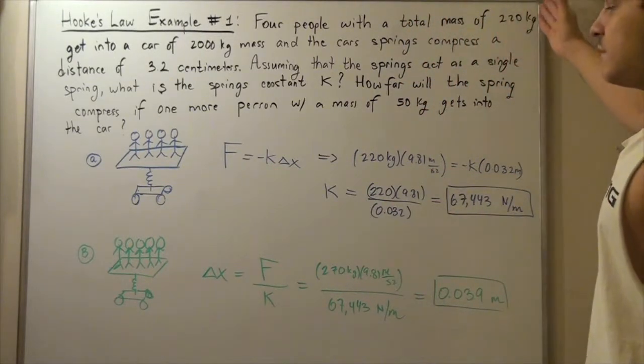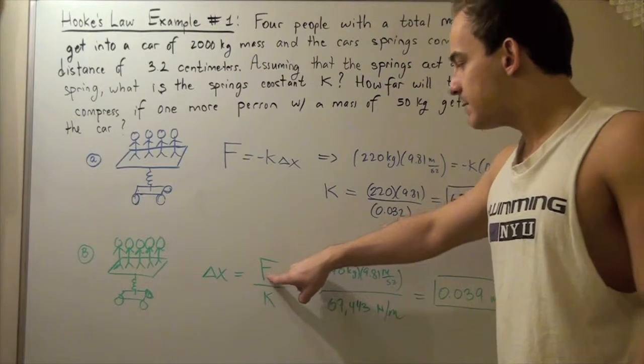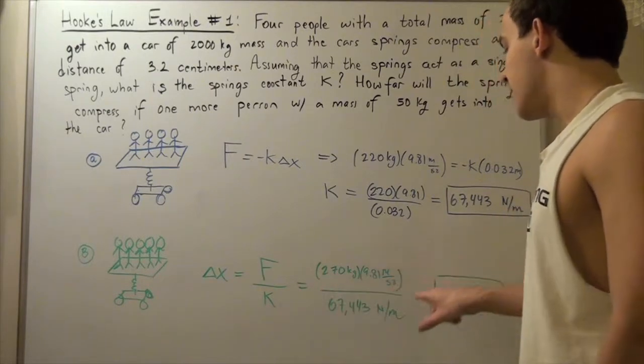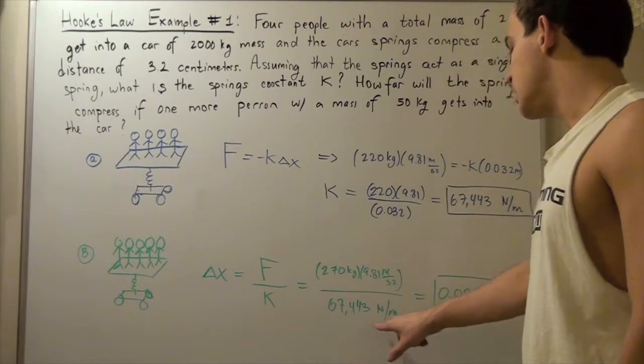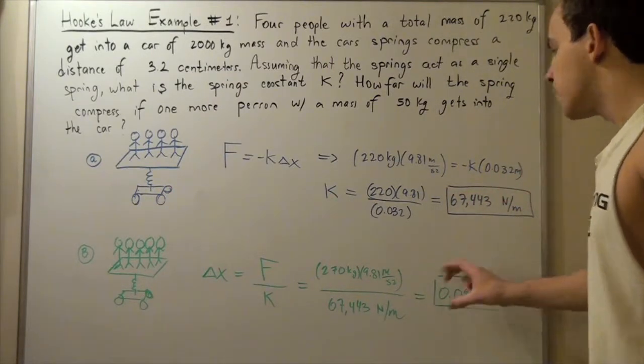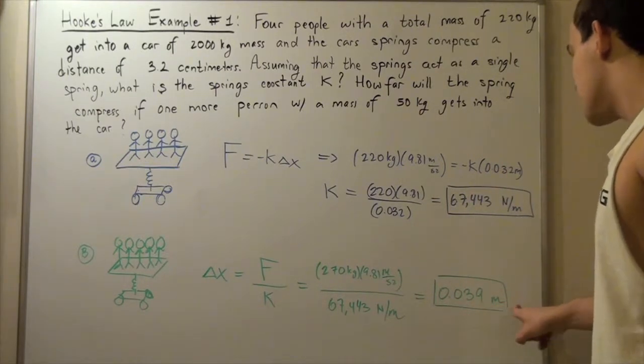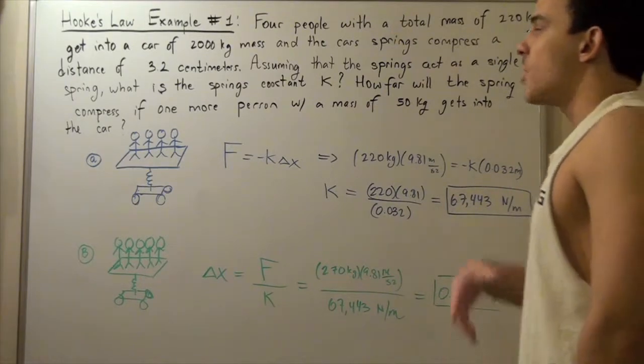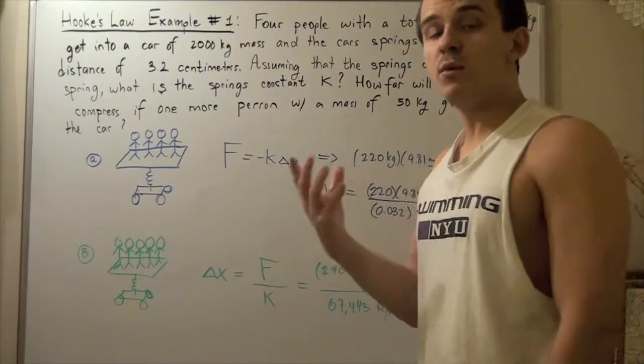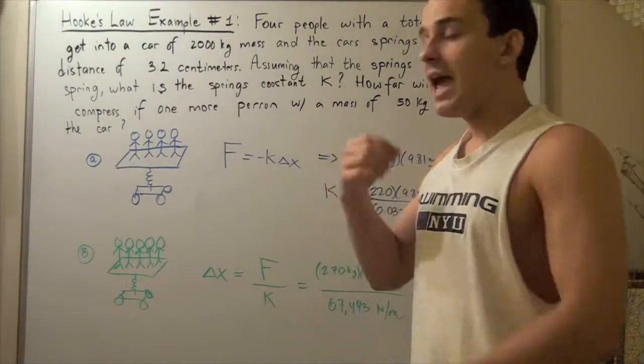220 plus 50 is 270. So now our new total mass is 270. We basically plug in m times g in the top, so 270 times 9.81 meters per second squared, divided by 67,443 newtons per meter, our spring constant. We plug that into our calculator and we find that our spring compresses a distance of 0.039 meters. That's 3.9 centimeters versus 3.2 centimeters in our initial compression. And that makes sense because now we have one more person getting in the car, so our spring should technically compress even more.